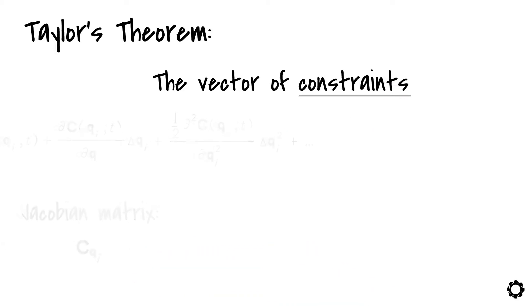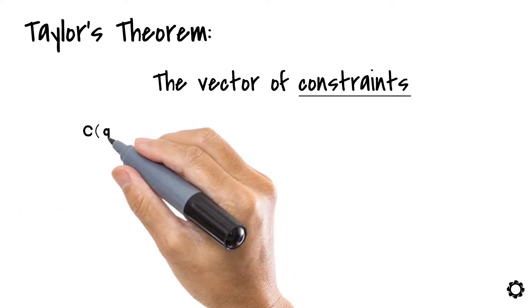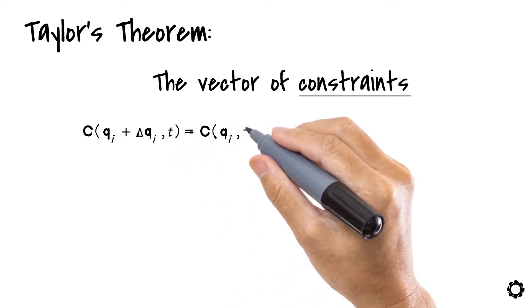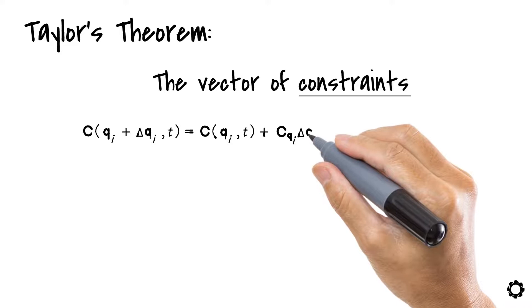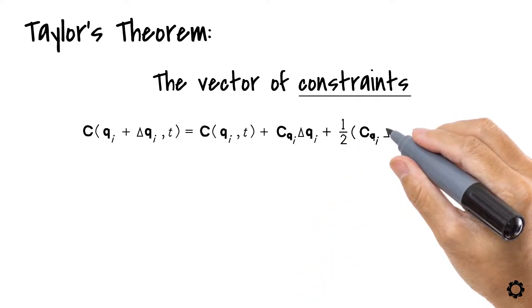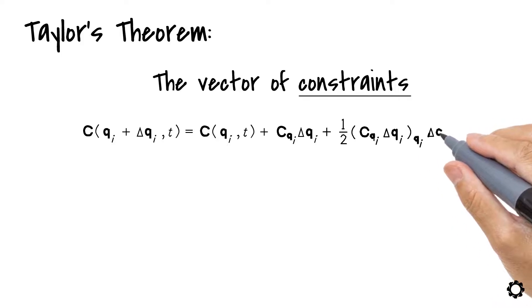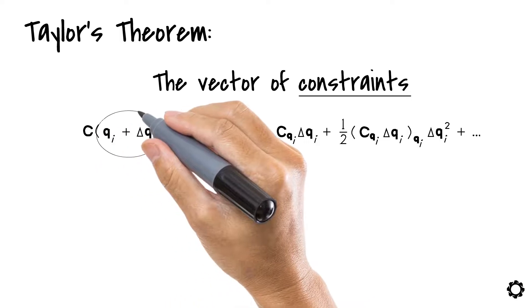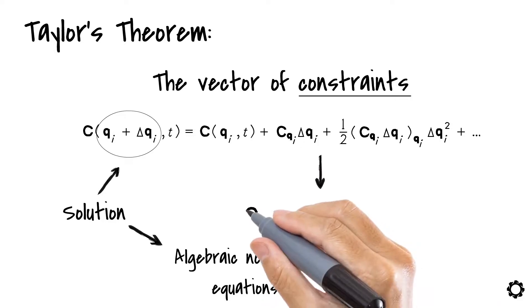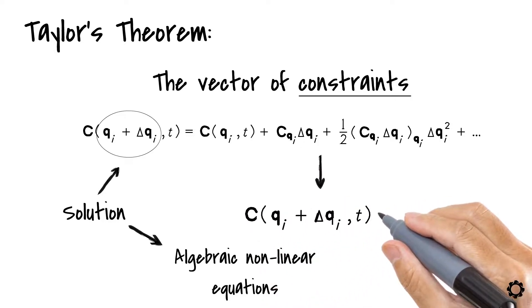C(qi + delta qi, t) equals C(qi, t) plus C_qi times delta qi plus 1/2 C_qi times delta qi_qi times delta qi squared and so on. As we said, if the vector qi plus delta qi is the solution of the system of algebraic non-linear equations, then we can say that C(qi + delta qi, t) equals zero.